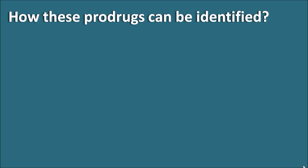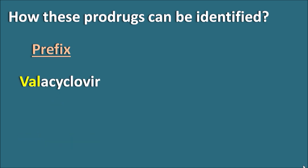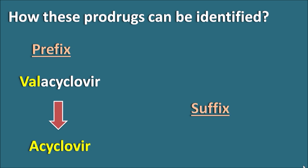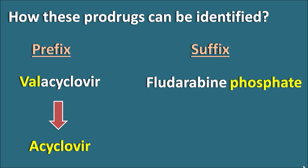We come across so many drug names — how can we identify whether a drug is a prodrug? Most of the time we can identify prodrugs in various ways. First, by using a prefix. For example, valacyclovir is a prodrug of acyclovir. Acyclovir is an antiviral agent, and its prodrug is valacyclovir.